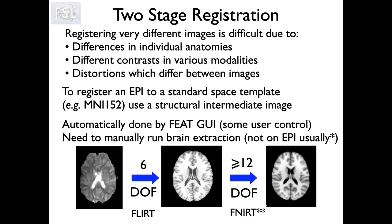The second stage goes from the T1-weighted structural of that individual to the standard-space template. The standard-space template is T1-weighted, so they're the same modality — no contrast differences to cope with, and both have good resolution. However, the anatomy is different, so I need to use non-linear registration: typically an affine initialization followed by non-linear registration with FNIRT. Then I can combine the two registrations together and go from EPI to standard space with a single resampling, as discussed in another video.